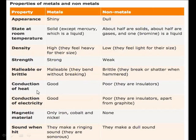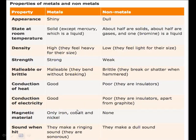Next property — conduction of heat and electricity: metals are good conductors of heat as well as electricity. On the other hand, non-metals are poor conductors of heat and electricity — they are insulators, except graphite. Magnetic material: iron, cobalt and nickel behave as magnetic materials, whereas none of the non-metal elements are magnetic. Sound when struck: metals make a ringing sound, so are sonorous. Non-metals are non-sonorous.